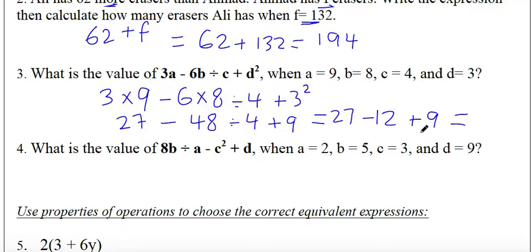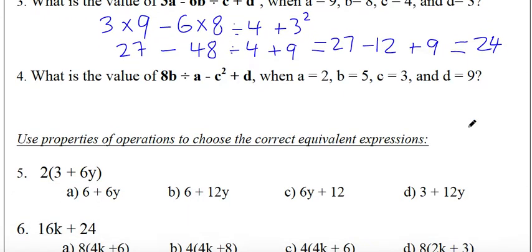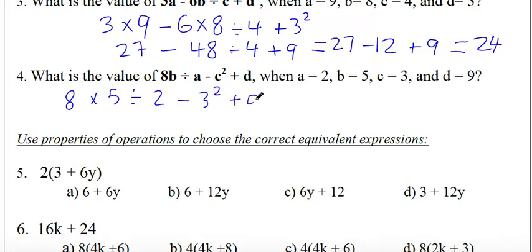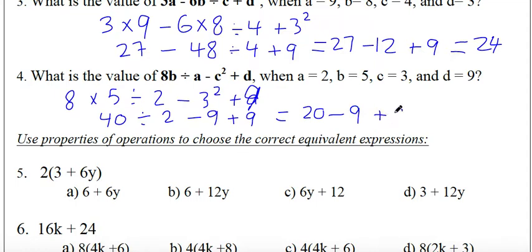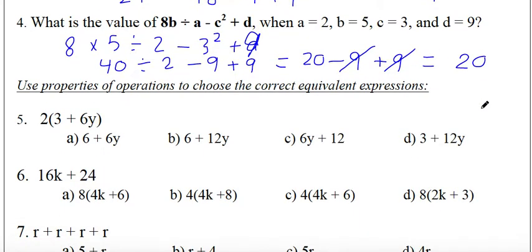The result is 24. Next question: what is the value of 8b divided by a minus c squared plus d? Substituting: 8 times 5 divided by 2 minus 3 squared plus 9. That gives 40 divided by 2 minus 9 plus 9, which simplifies to 20 minus 9 plus 9 equals 20.